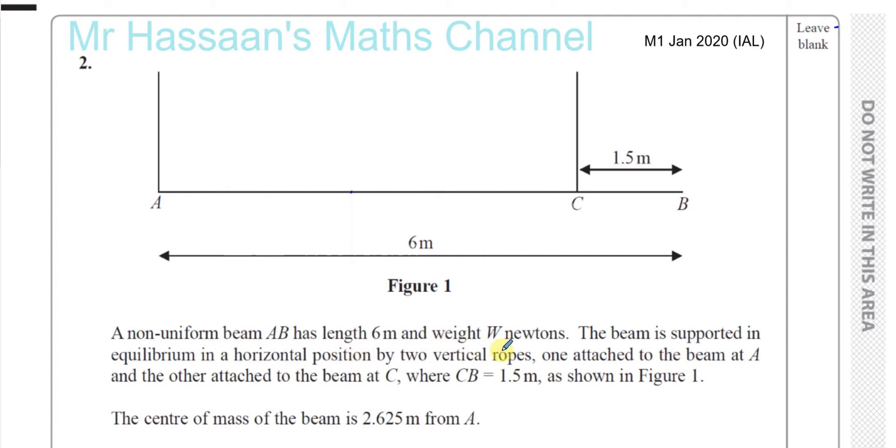Okay, our weight W Newtons. The beam is supported in equilibrium in a horizontal position by two vertical ropes. So it's in equilibrium in horizontal position by these two ropes A and C. One attached at A and the other attached at C, where CB is equal to 1.5 meters, as shown in figure 1. The center of the mass of the beam is 2.2625 meters from A. So 2.2625 meters in from A is where the weight of this will act.